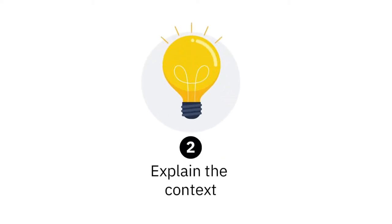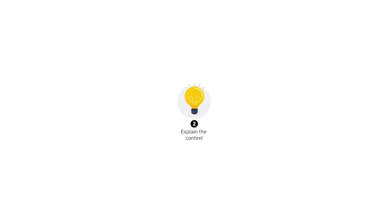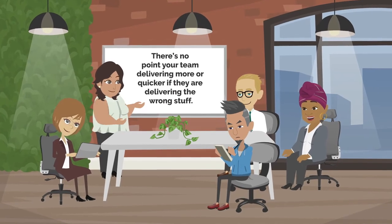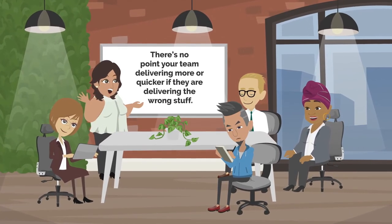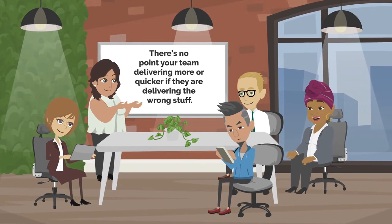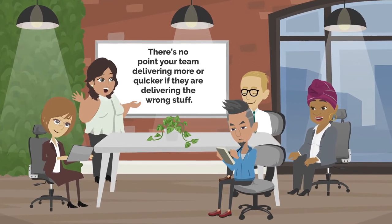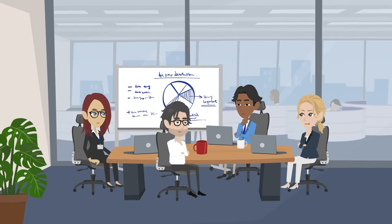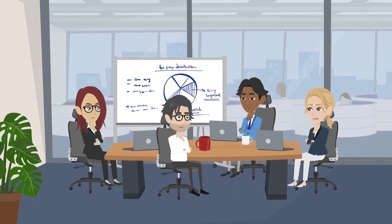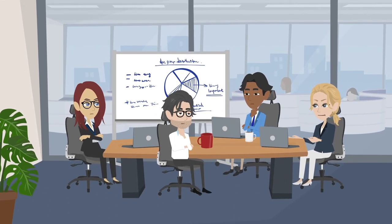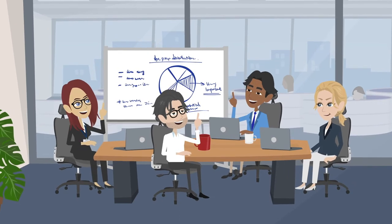My second tip is to help the people that you're working with understand the context. Indeed, there's no real point in you or your team delivering more stuff or delivering it quicker if they're delivering the wrong stuff. Understanding the problem that we're trying to solve, the reason that we're here, will allow people to make more educated decisions when faced with ambiguity.